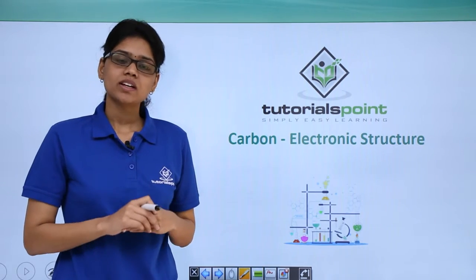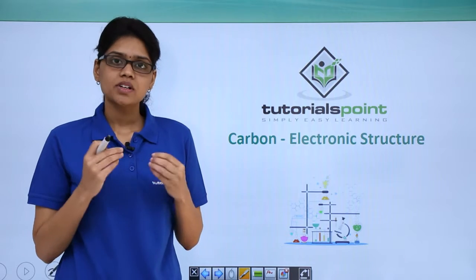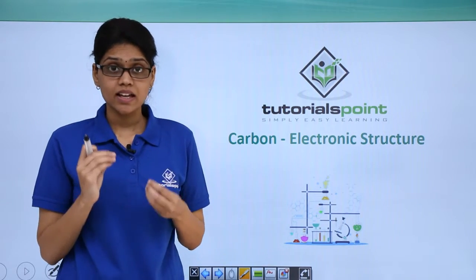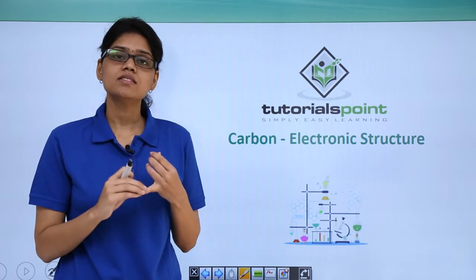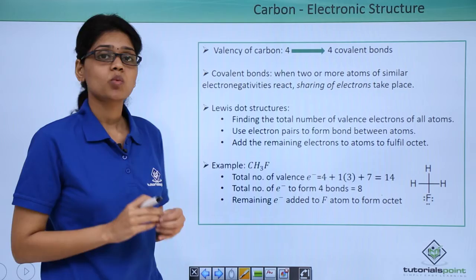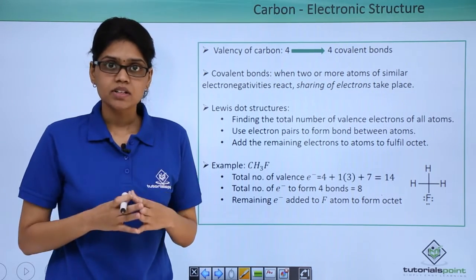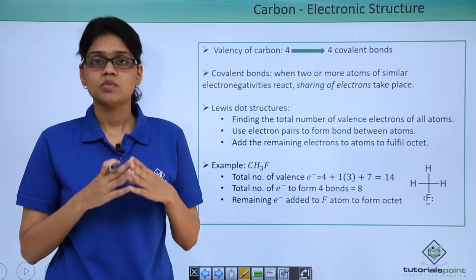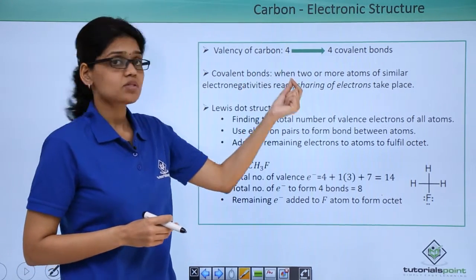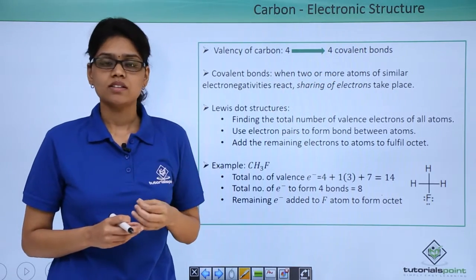Hello everyone, welcome to the topic carbon and electronic structure. The first thing we consider about the electronic structure of a given element or atom is its electronic configuration. We have to see what is the valence electron of the given atom. Carbon is tetravalent, which means that it has 4 valence electrons. 4 valence electrons means it can form 4 bonds, and carbon is a non-metal.